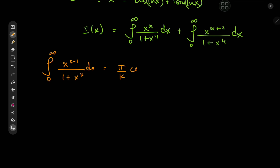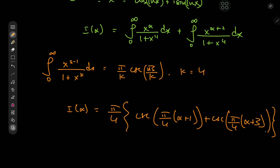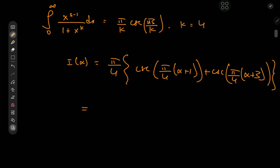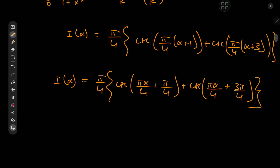That result equals π/k times the cosecant of πs/k. For our integrals, k equals 4. So I(α) sorts out to π/4, which can be factored out, and we're left with the cosecant of π/4 times (α plus 1) plus the cosecant of π/4 times (α plus 3). This gives us π/4 times [cosecant(πα/4 + π/4) + cosecant(πα/4 + 3π/4)]. Our target case, recall, was α equal to the imaginary unit i.